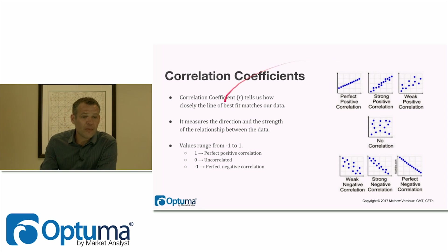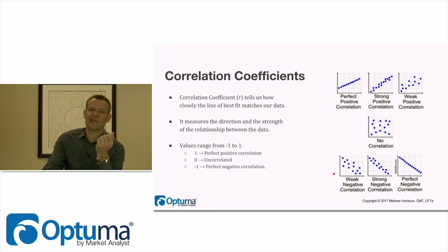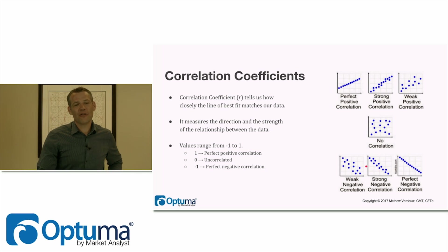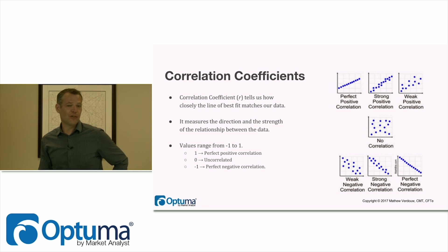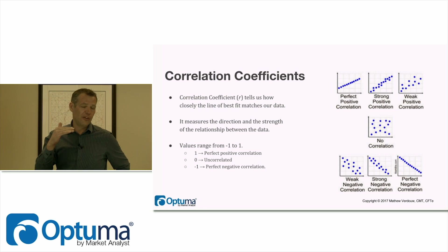In the middle is obviously no correlation — no line of best fit could be drawn. Then we go into negatives: negative weak correlation means that for an incremental increase in the S&P, we actually have a decrease in Microsoft returns. Strong negative correlation and perfect negative correlation are also listed. The values typically range from positive one — perfect correlation — through to minus one — perfect negative correlation. A common mistake is thinking negative one means uncorrelated; it doesn't. Negative one is perfect negative correlation and zero is completely uncorrelated.